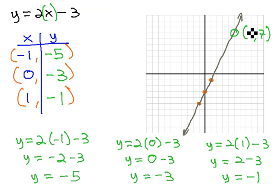5, comma, 7. That means when x is 5, y should be 7. Let's check it and see what we get.